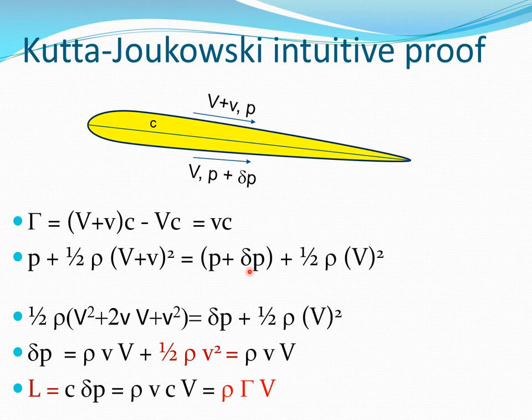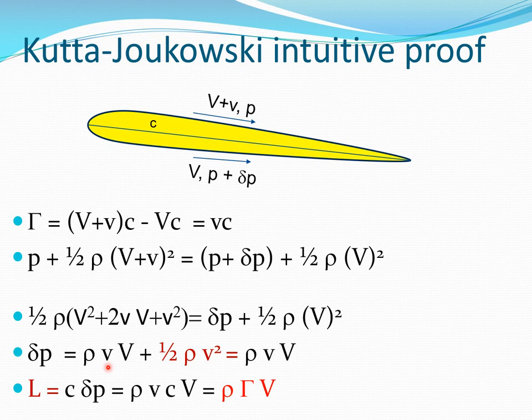Applying Bernoulli's equation between the top and bottom of the airfoil: p + ½ρ(V + v)² = (p + Δp) + ½ρV². Since no energy is added and we are just outside the boundary layer, we can use inviscid flow theory. The p terms cancel and expanding (V + v)² gives Δp = ρvV + ½ρv². Since v is small, the term ½ρv² is negligible, so Δp ≈ ρvV.